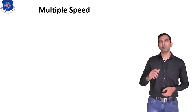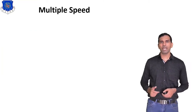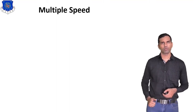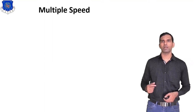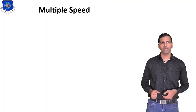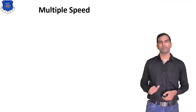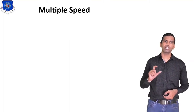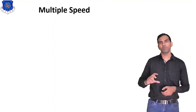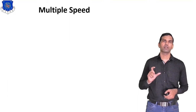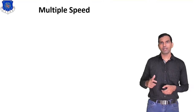Now we discuss the second type of floating mode: multiple speed control mode. In single speed mode, the controller output changes at a fixed speed. In multiple speed mode, the output changes at different speeds at different times — for example, at t1 the speed is different from the speed at t2.